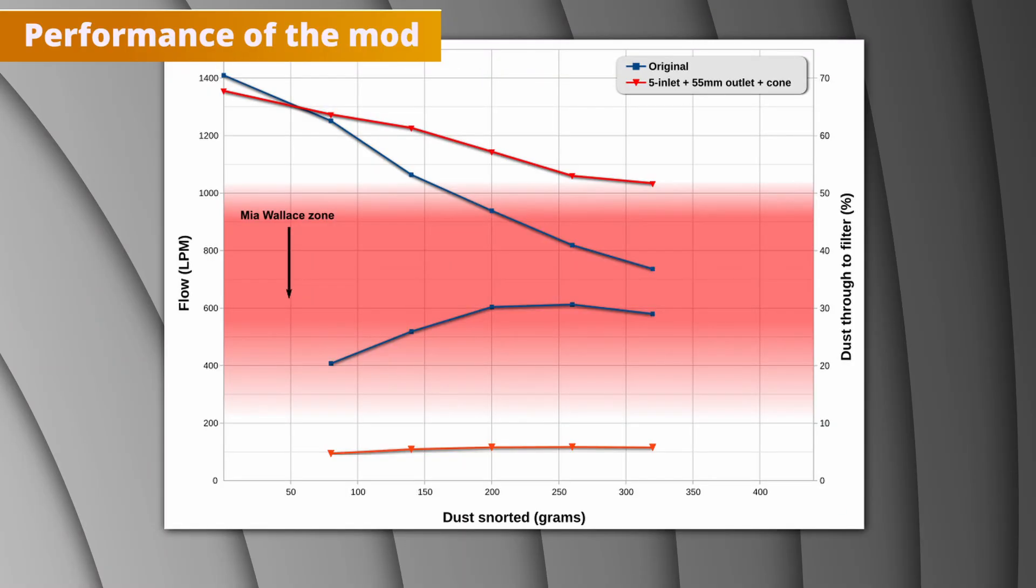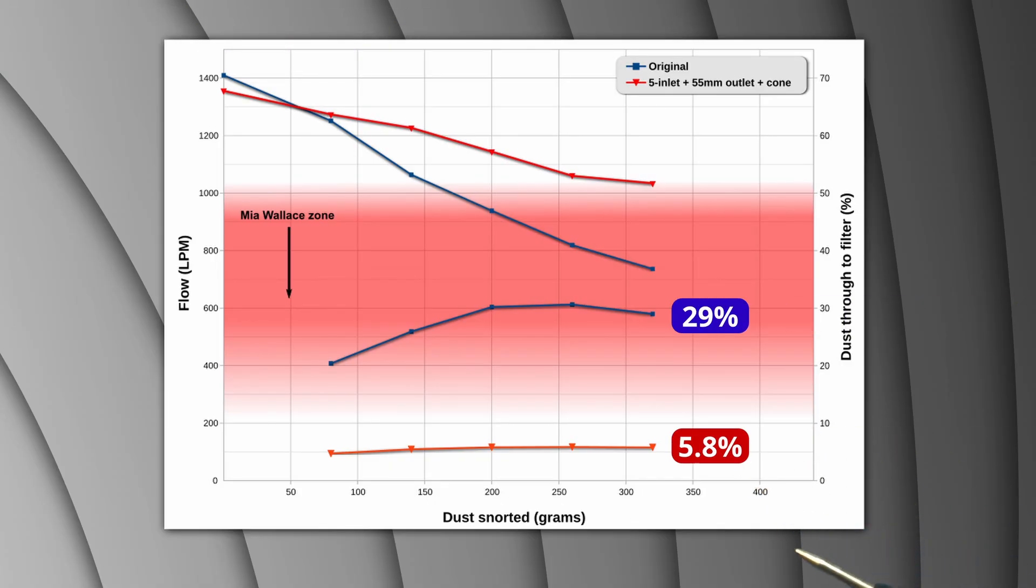Filtration efficiency of the mod is much better with only 5.8% of the dust making it to the filter versus 29% in the original. After putting 320g into the vacuum, only 18.6g made it to the filter compared to 86.8g of the original.